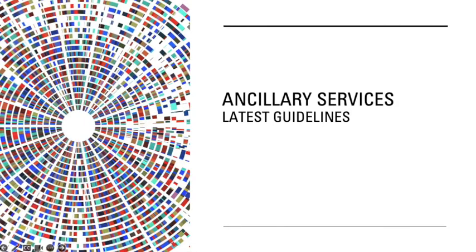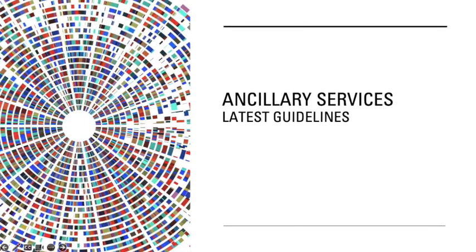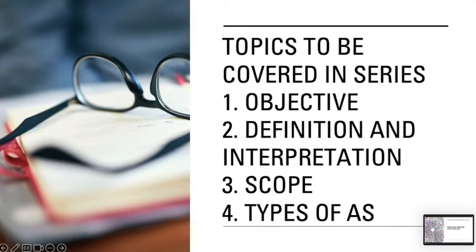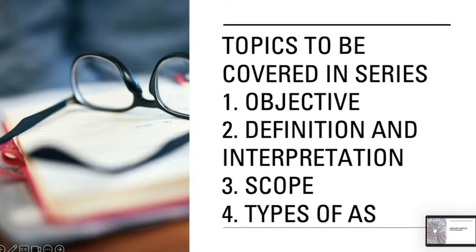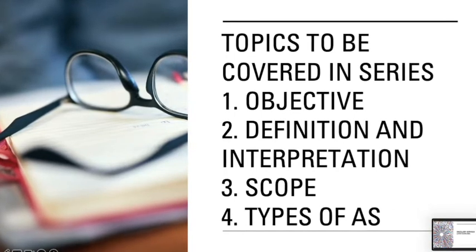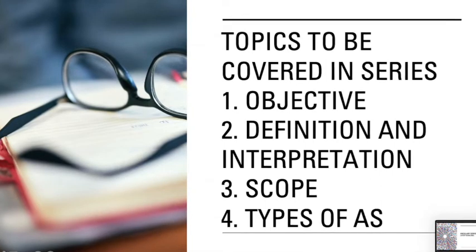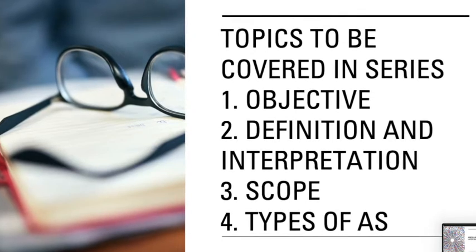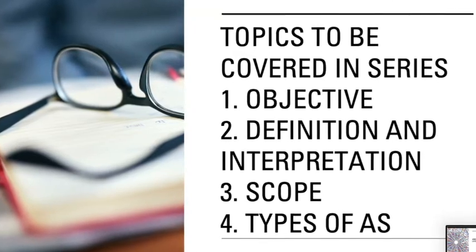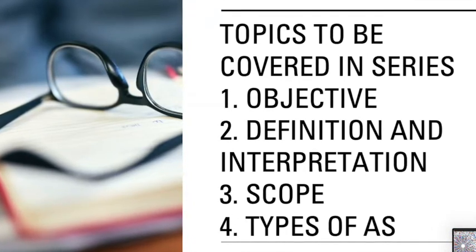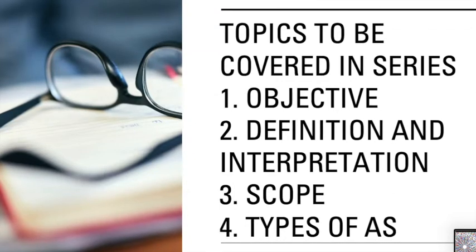In this video, I would be discussing about the various aspects such as objectives, definitions and interpretations of the terms which have been used in this document, the scope of the document, the different types of ancillary services which the government is planning to allow. I would also be covering the RGMO part, that is the first of the ancillary services which the government wants to use. So let's begin with what is the objective of this document.